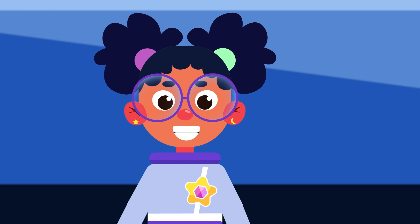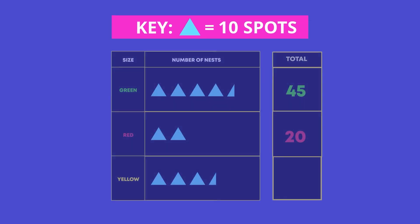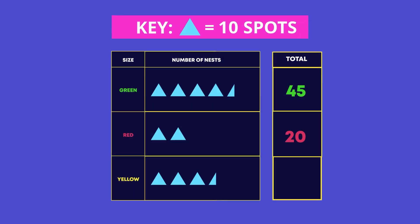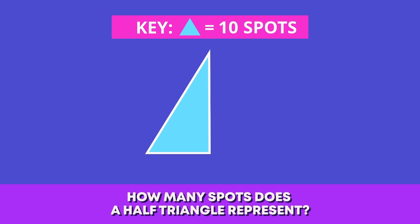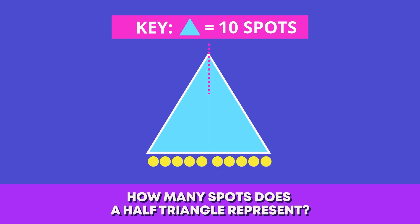Me too! The space rangers recorded how many spots the eggs have. Each triangle represents 10 spots. How many spots do you think a half triangle represents? A half triangle will stand for half of 10. That's correct, half of 10 is five, so half a triangle equals five.